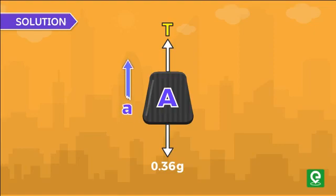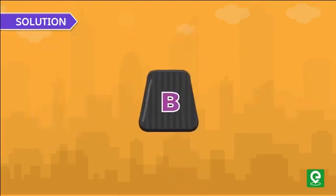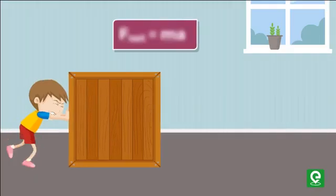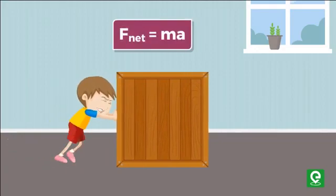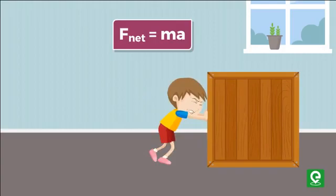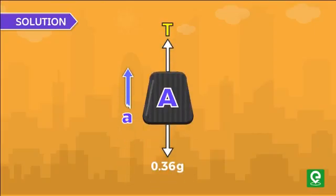From Newton's second law of motion, we know that net force acting on a body is equal to its mass into acceleration. Applying this on block A gives us tension minus 0.36g equal to 0.36a.